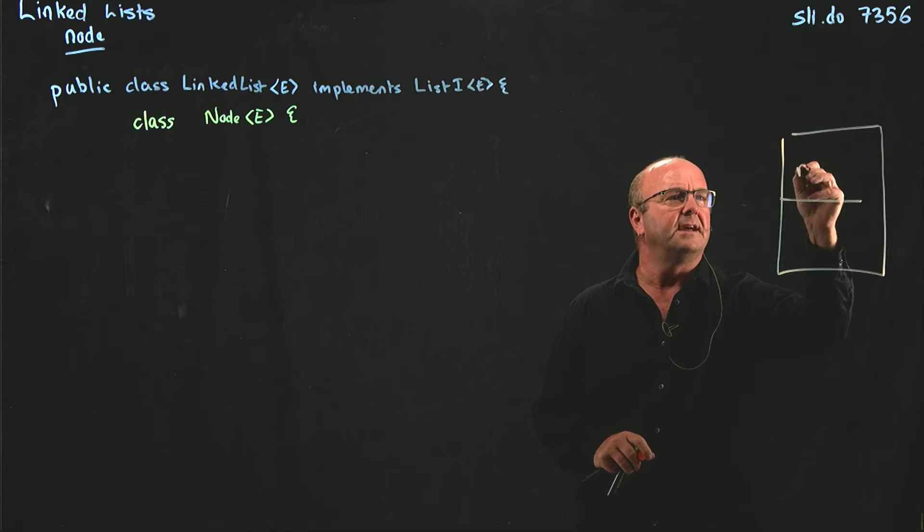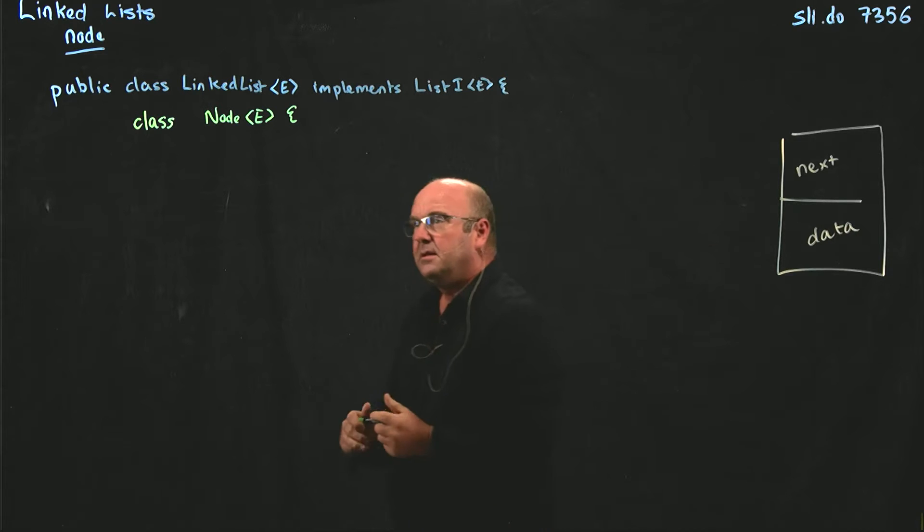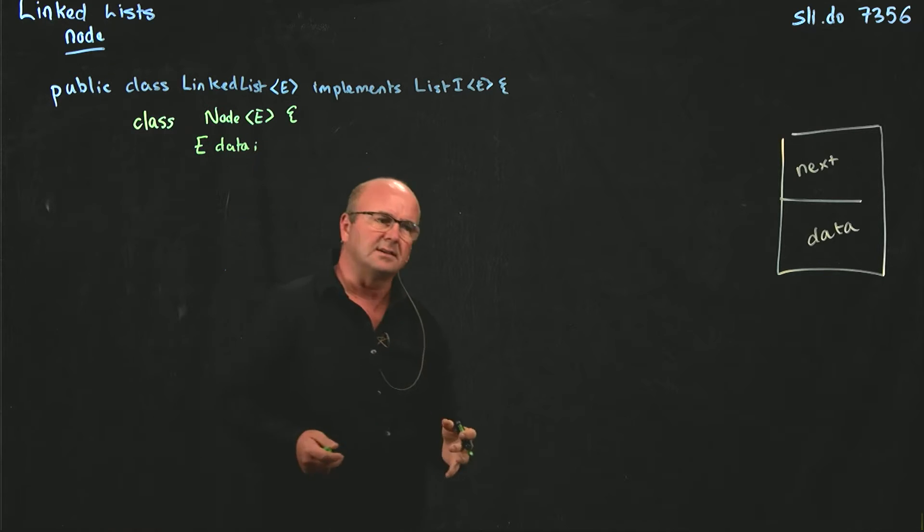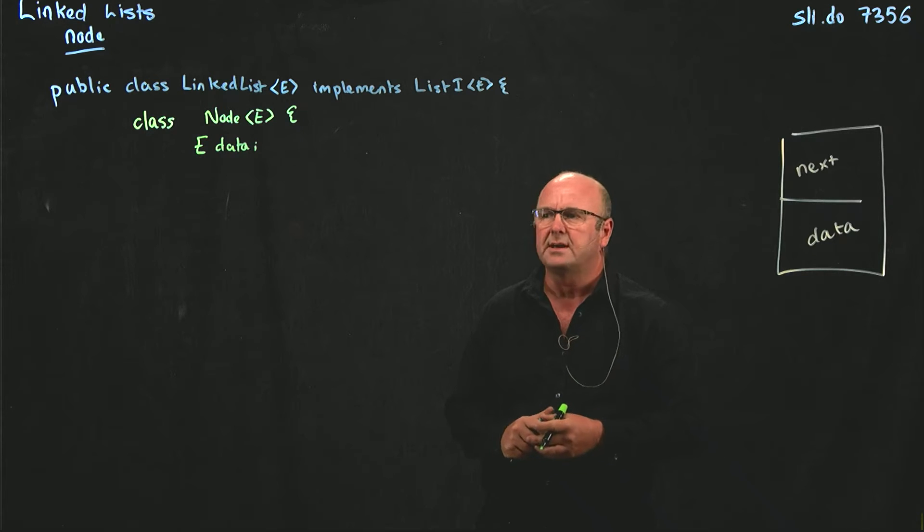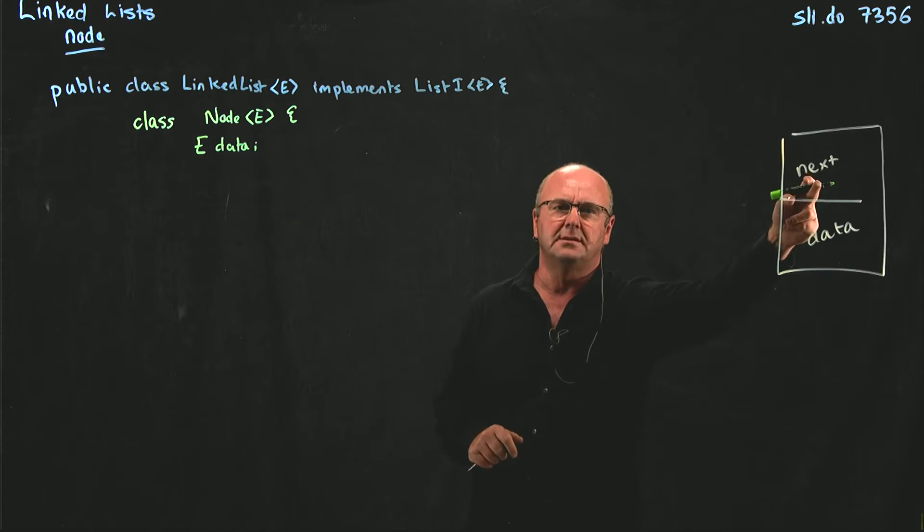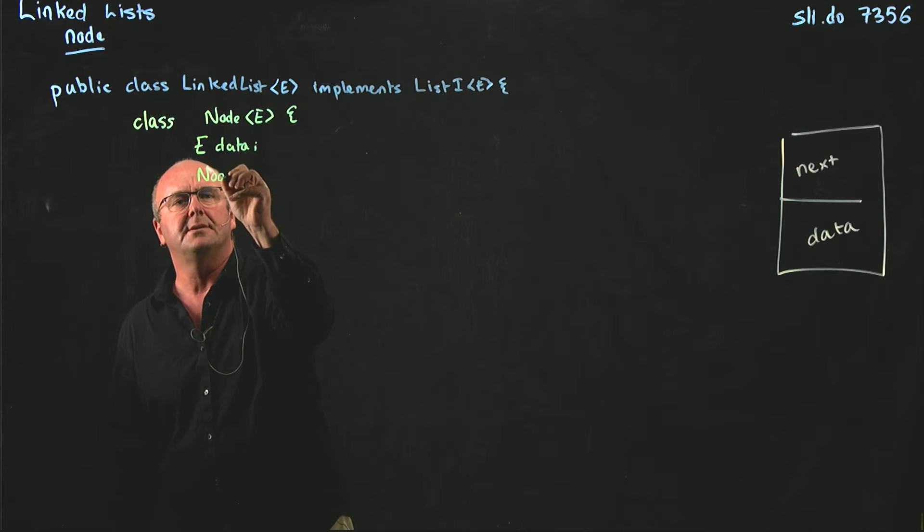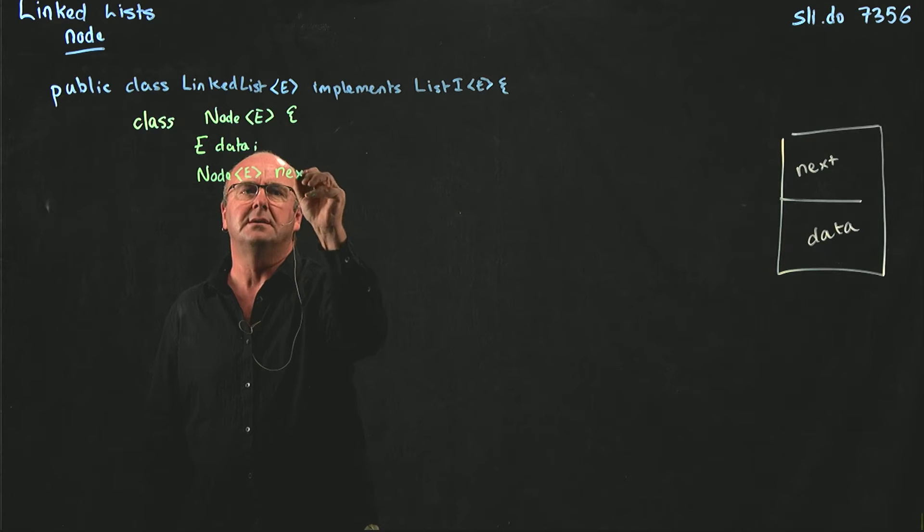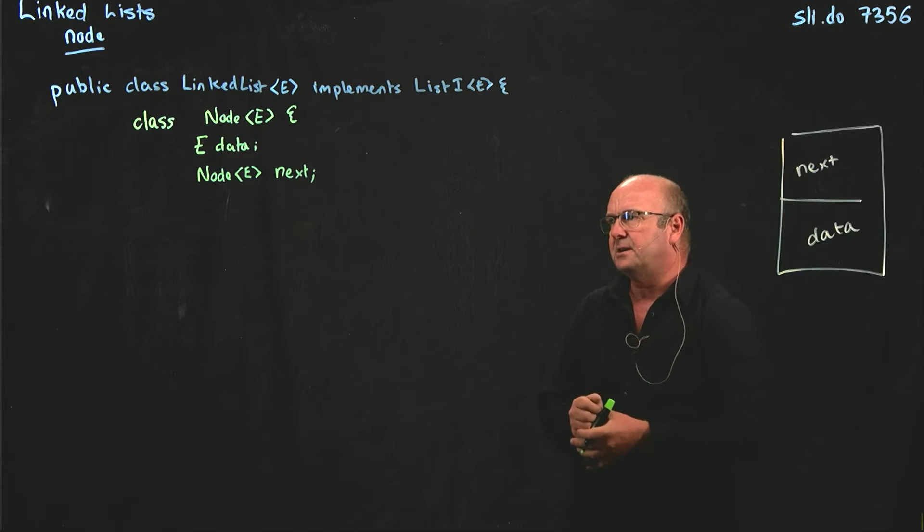We have our next pointer and our data. So our data is of type E. We don't know what that is, and we don't care what that is. It's just some generic type that if you're using our linked list, we're making a contract that we'll put in there. And our next is a pointer to another node. So that's going to be of type Node E, of ourselves. So we've got our two variables, our next and our data.